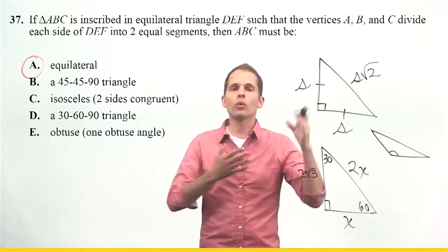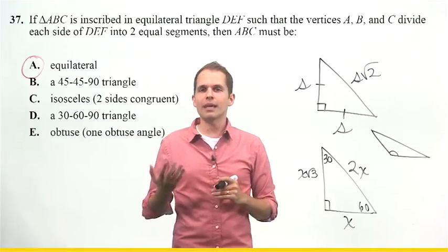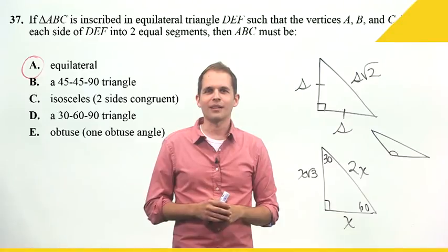So, whether it's obtuse, or it's one of these two special right triangles, you have to know more than just the area of a triangle, or that the angles always add up to 180.